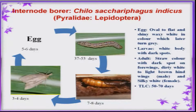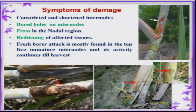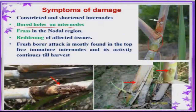The next important pest is the internode borer, Chilo sacchariphagus. Eggs are oval in shape and the larvae have a white body with dark spots on the dorsal region. Pupation takes place in the cane itself and after seven to eight days the pupa emerges as an adult, which lives for three to four days. This internode borer is more important once the cane starts producing internodes. Many holes are present between internodes, the internodes are shortened or constricted, and when you cut open fresh cane you will see the reddening color of the tissues inside.